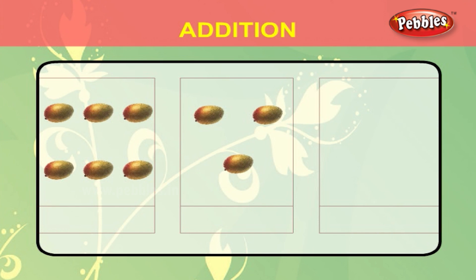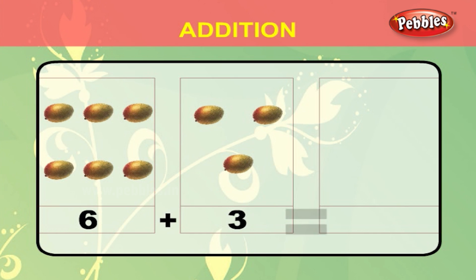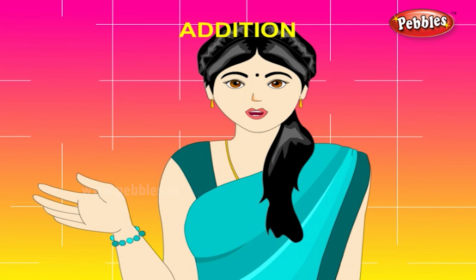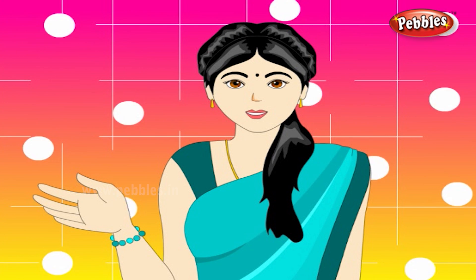Let us see one more example. There are adding 1 digit numbers with 2 digit numbers.